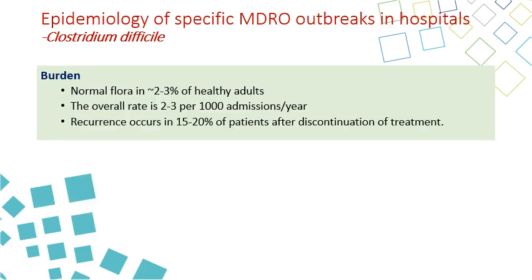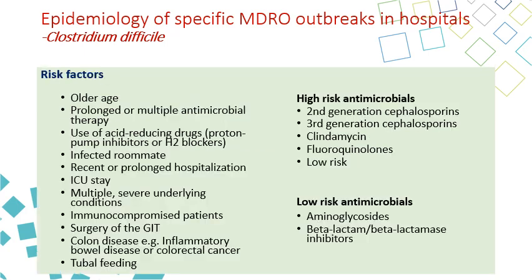Clostridium difficile is normal flora in two to three percent of healthy adults. The overall rate is two to three per 1,000 admission years. Recurrence happens in 15 to 20 percent of patients after discontinuing treatment. Risk factors include old age, prolonged or multiple antimicrobial therapy, use of acid-reducing drugs including proton pump inhibitors and H2 blockers, exposure to an infected roommate, recent or prolonged hospitalization, ICU stay, multiple comorbidity, immunocompromised patients, surgery, colon disease especially inflammatory bowel disease, and tube feeding.